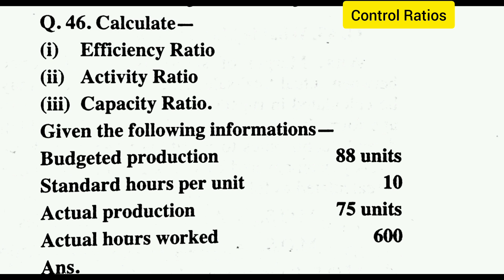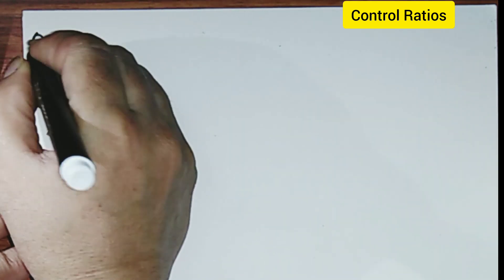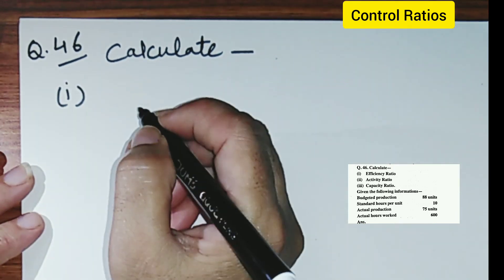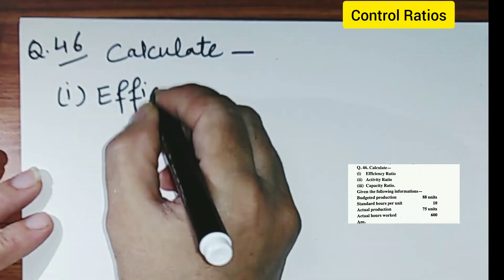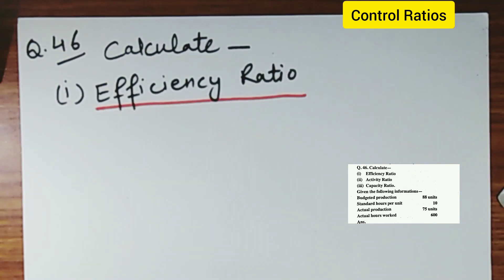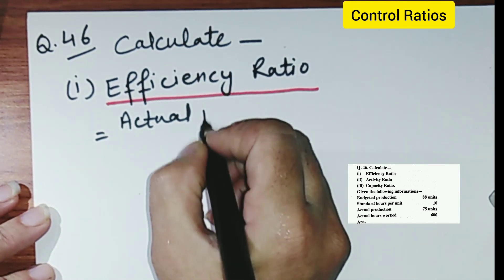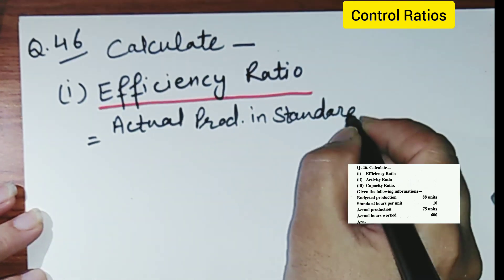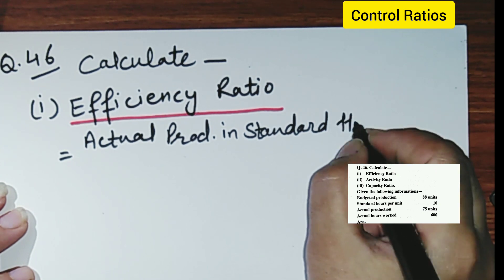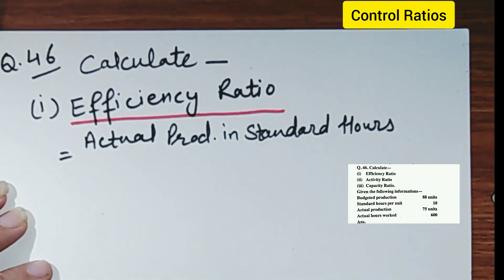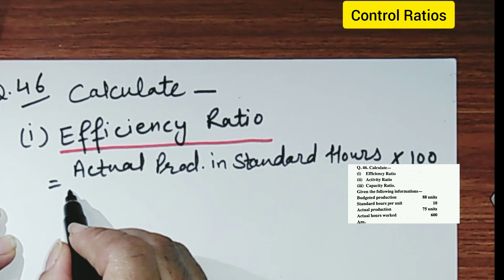First we will calculate the efficiency ratio. The formula for efficiency ratio is: actual production in standard hours, upon actual hours worked, multiplied by 100.